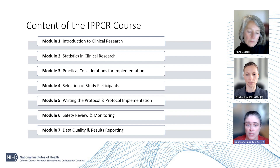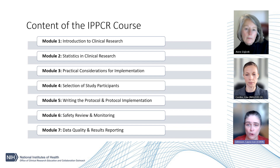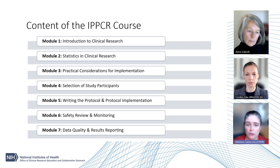The safety and monitoring aspects of research will be the focus of Module 6. Here, we'll discuss institutional review boards. Module 7 will focus on data quality and results reporting. At the end of the course, supplementary materials are provided, which includes topics of special interest. These materials are intended to be used for further learning, but the material is not included on the final exam.